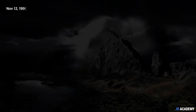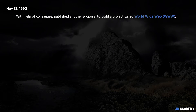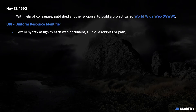Tim Berners-Lee kept digging and moved from hypertext to hypermedia. With the help of his colleague, on 12th November 1990 he published another proposal to build a project called the World Wide Web. After almost a year of work, Tim and his team invented and implemented several things. The first was URI — Uniform Resource Identifier — a text or syntax assigned to each and every web document as a unique address or path.